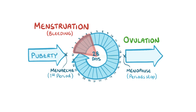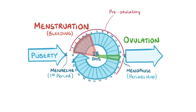Ovulation, or the release of the oocyte from the ovary, usually occurs 14 days before the first day of menstruation — in other words, 14 days before the next cycle begins. So for an average 28-day menstrual cycle, this means there are usually 14 days leading up to ovulation, the pre-ovulatory phase, and 14 days following ovulation, the post-ovulatory phase.